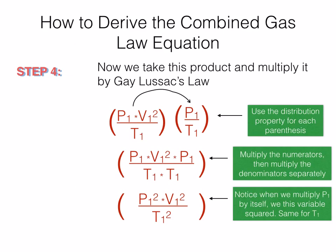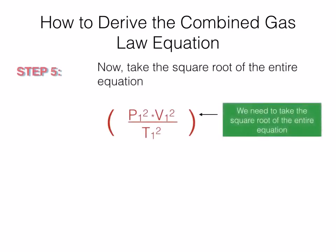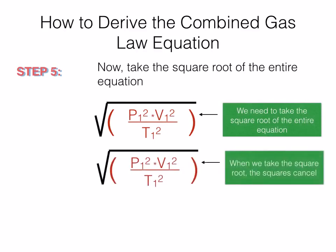Notice the one thing they all have in common are squares — each of these are squares. So we want to simplify it the same way you do in mathematics. We're going to take the square root. Taking the square root cancels not only the square root but also the powers, leaving us nothing but P1 times V1 divided by T1.